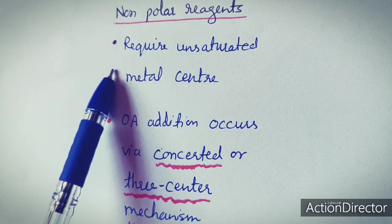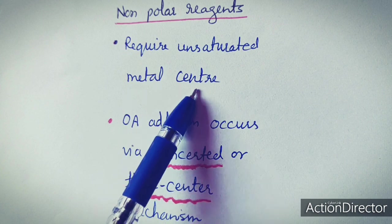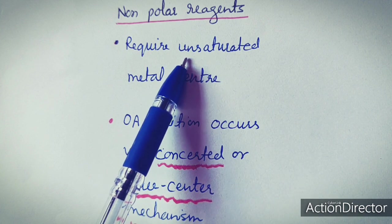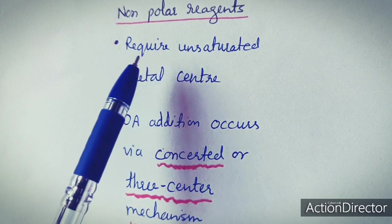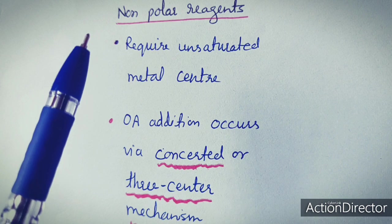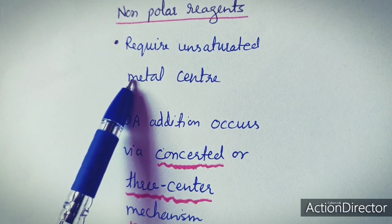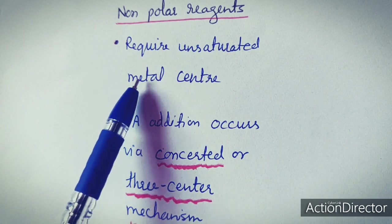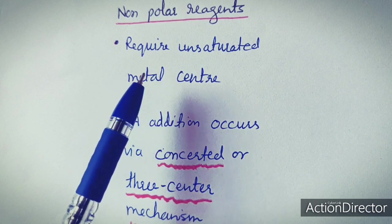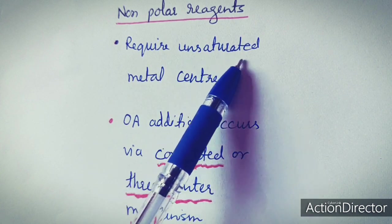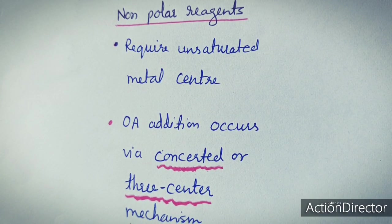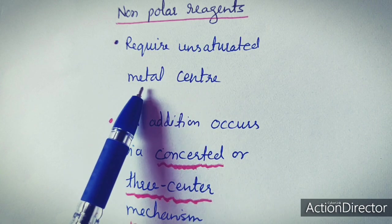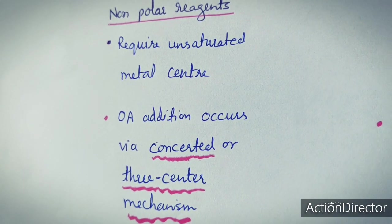Nonpolar reagents generally require an unsaturated metal center. In inorganic chemistry, unsaturation means fewer electrons — specifically, less than 18 electrons. Transition elements have nine valence orbitals and should have 18 electrons in total, but unsaturated compounds do not have 18 electrons in their valence shell. Here, unsaturation does not refer to double bonds.